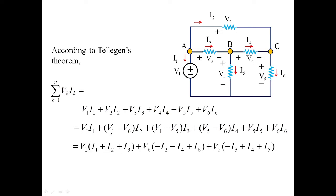Collecting terms, we take all V1 aside: V1 times (I1 plus I2 plus I3). Then V6 is multiplied with I2, I4, and I6, giving V6 times (minus I2 minus I4 plus I6). Similarly V5 is associated with I3, I4, and I5, giving V5 times (minus I3 plus I4 plus I5). This is rearranged as equation one.